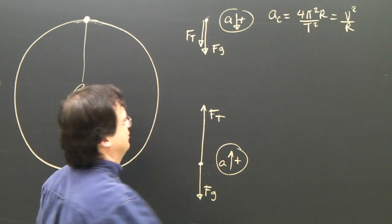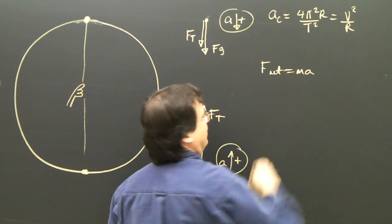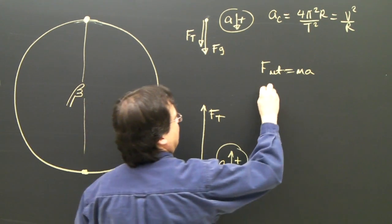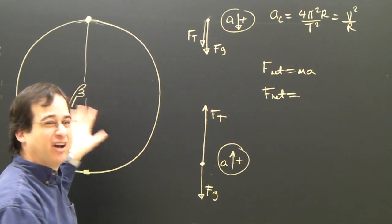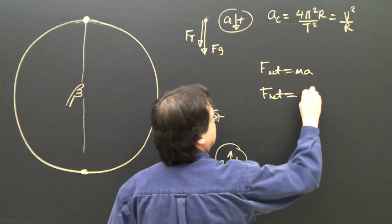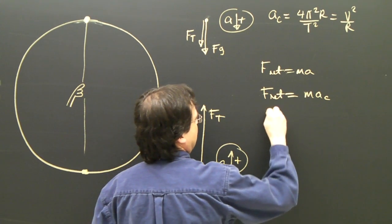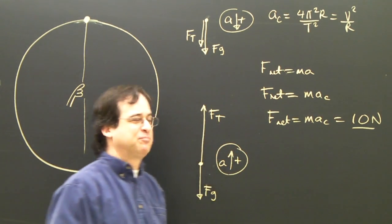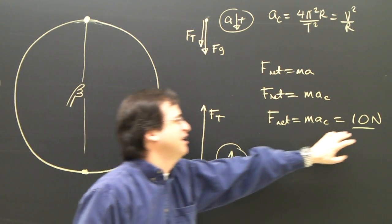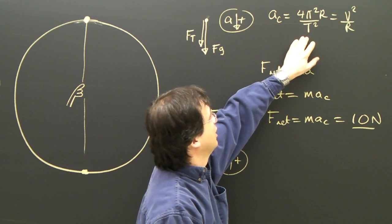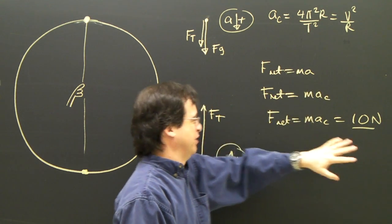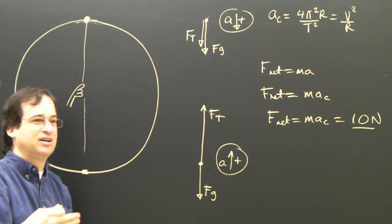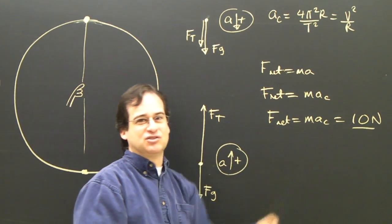Let's say I calculate the net force: F net equals ma_c, and it equals 10 newtons. What does that 10 newtons mean? I calculated it using the mass times the centripetal acceleration. This means that if this object is going to continue going in a circle, it needs 10 newtons towards the center.